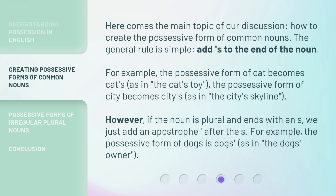The possessive form of 'city' becomes 'city's', as in 'the city's skyline.' However, if the noun is plural and ends with an s, we just add an apostrophe after the s. For example, the possessive form of 'dogs' is 'dogs'', as in 'the dogs' owner.'